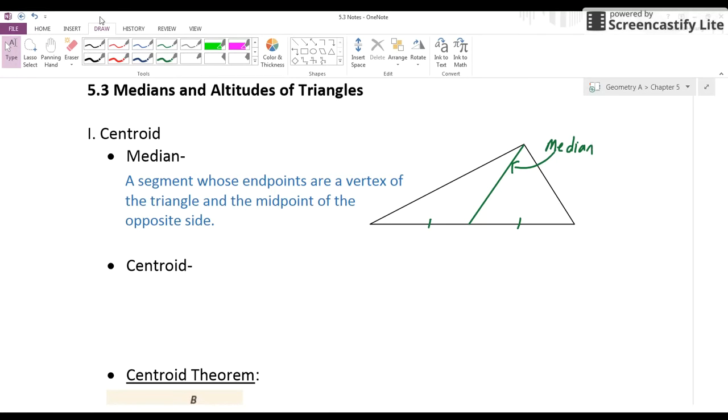Remember, you can tell if something is the midpoint by looking for these congruent marks, so the side is being cut in half. What I've just done here in green on this triangle is a median. So again, a segment whose endpoints are a vertex and a midpoint of the opposite side.